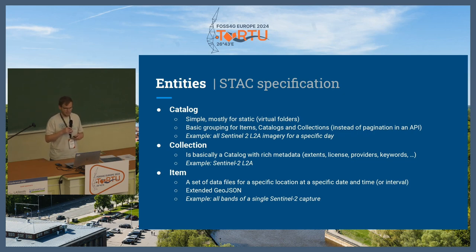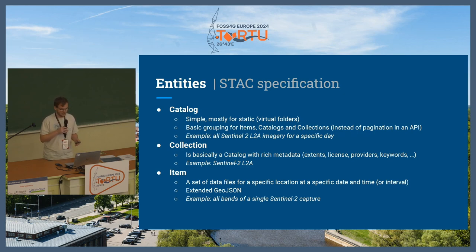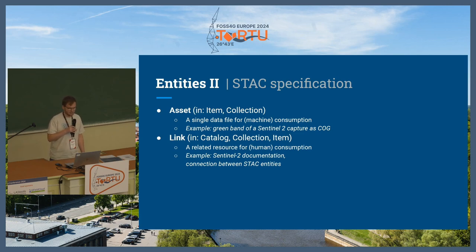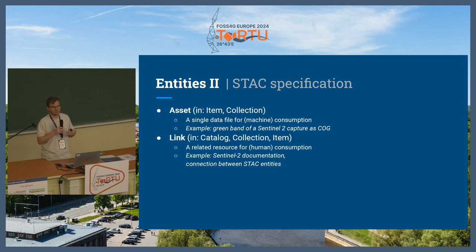The item is the last part of the equation — that is where the individual data files, like individual captures of Sentinel-2A, are described. You specify the date and time it was captured, the location as a geometry in GeoJSON, and give all additional information like viewing angles, projection information, and so on. Then you have assets in items and in collections, which point to the individual data files. For example, if you have a Sentinel-2 capture and all the bands are individual cloud-optimized GeoTIFFs, each file would be a specific asset — the green band as a COG file is one asset, the blue band would be a separate asset, and so on.